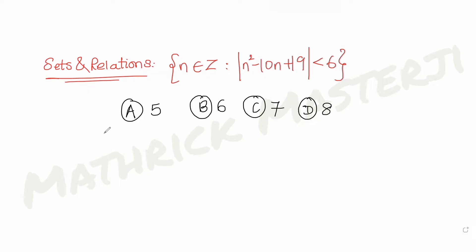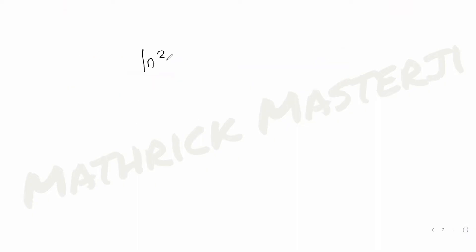Let's analyze that expression. Mod of n square minus 10n plus 19 is given to us as less than 6. If I remove the mod, I know I can have n square minus 10n plus 19 less than 6 and greater than minus 6. I can split it into two parts.